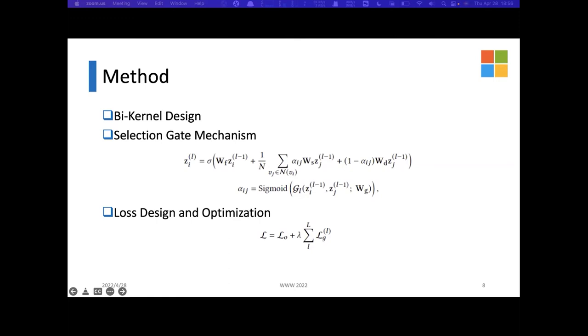Similar to vanilla classification methods, a cross-entropy loss L0 is used for the node classification problem. The difference is we utilize an additional cross-entropy loss LI for each layer L to guide the training procedure of the selection gate.